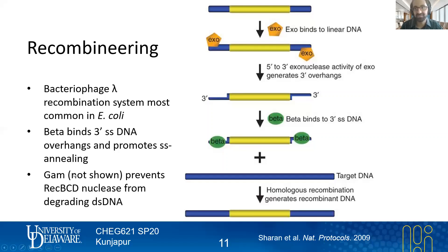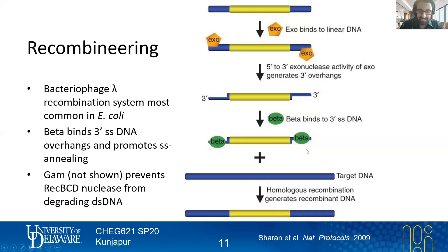Viruses naturally have some ability to counter that cellular defense, and we're just repurposing that process here. Based on the homology, you get homologous recombination. When you've got single strands entirely, rather than just single-stranded overhangs, this process most closely mimics the Okazaki fragment entering the lagging strand during DNA replication — though that's just mentioned in passing.